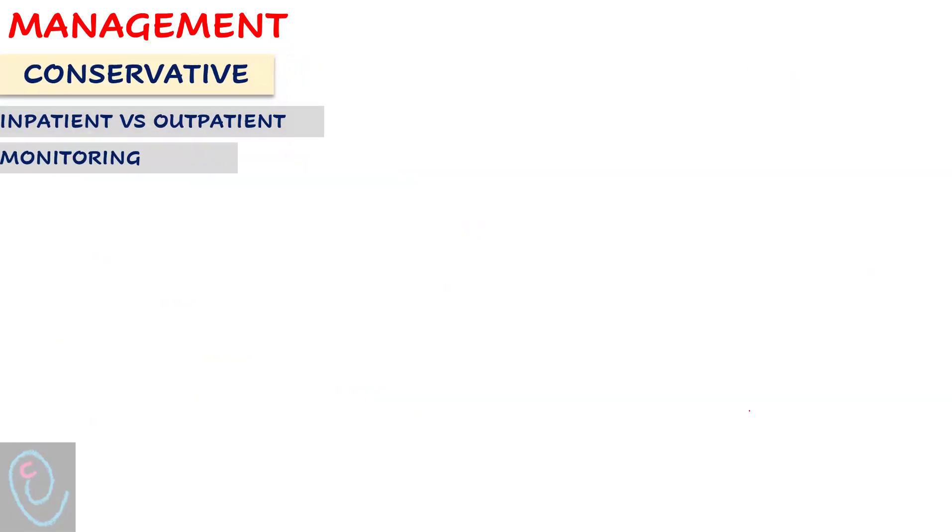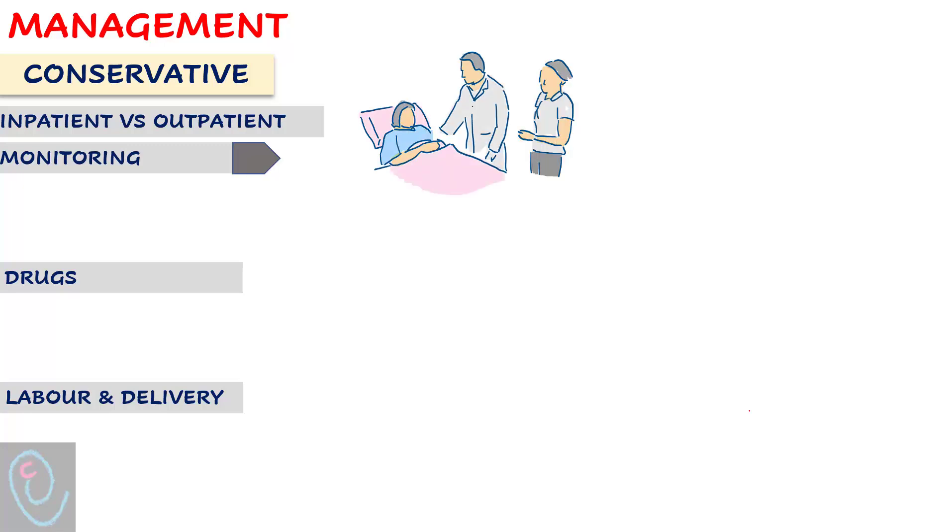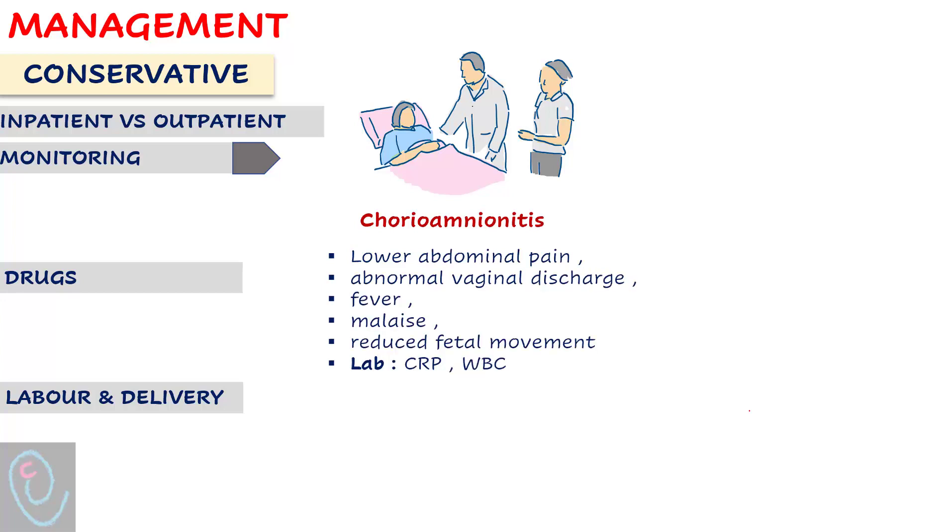Admit to monitor the mother and fetus, administer drugs, and deliver in a timely manner. Monitor the mother for features of chorioamnionitis, which include lower abdominal pain, abnormal vaginal discharge, fever, malaise, reduced fetal movements, increased white blood cells, and CRP.